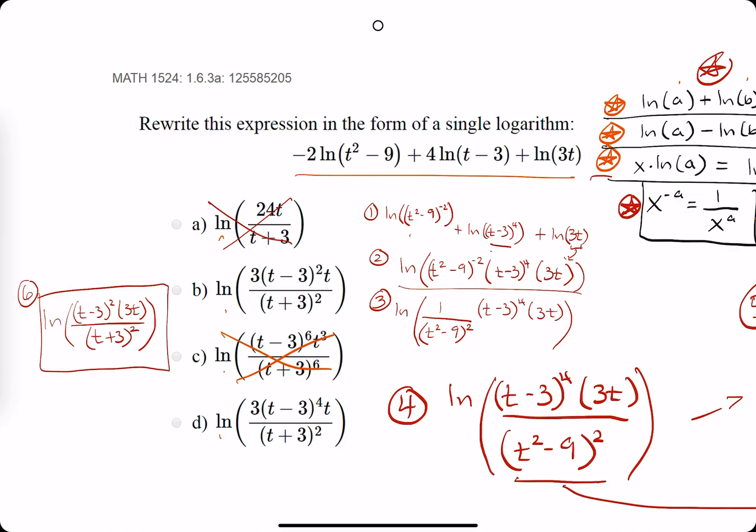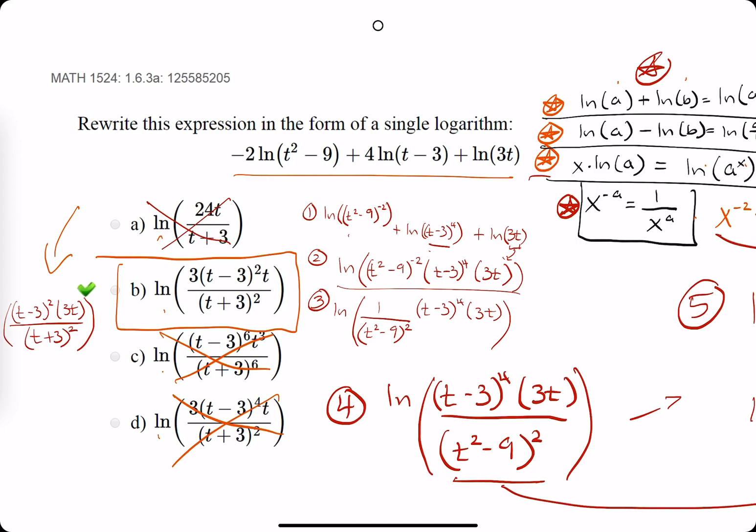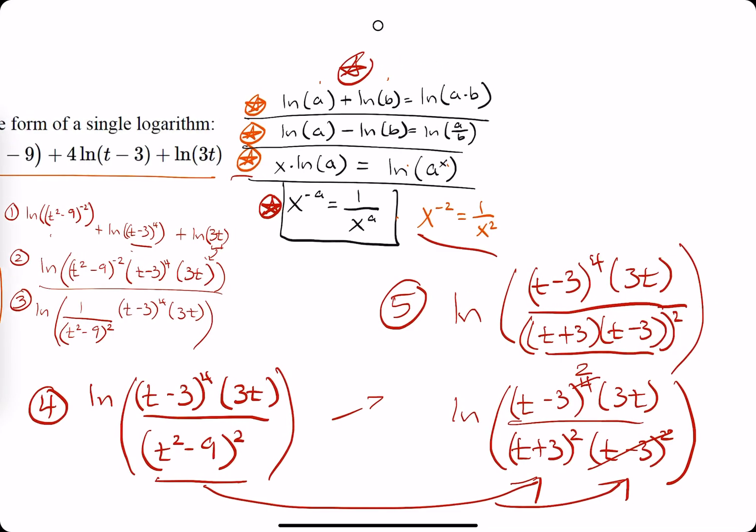That leaves us with B or D. And then, it looks like option D still has t minus 3 to the fourth, but our answer has t minus 3 squared. So, it can't be D. So, we're hoping for option B. Let's bring out the eraser. And we find out that B is the correct answer.